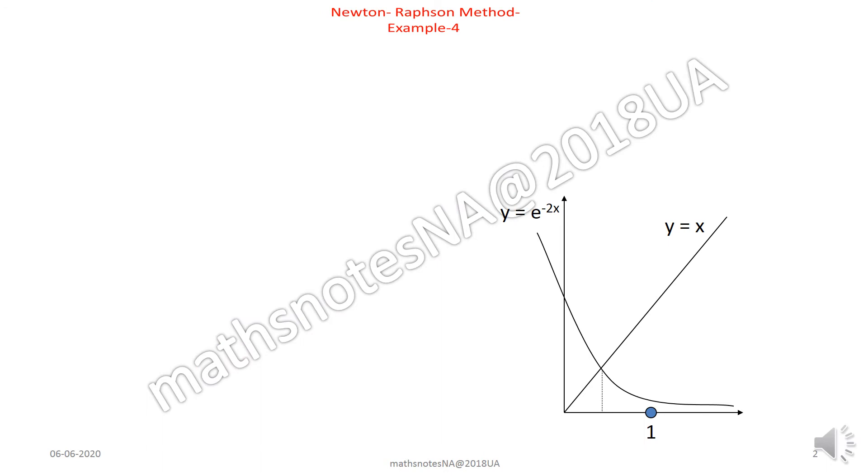Let's take an example based on it. This is example 4 of Newton-Raphson method. Find the real root of equation x - e^(-2x) = 0 using the Newton-Raphson method.